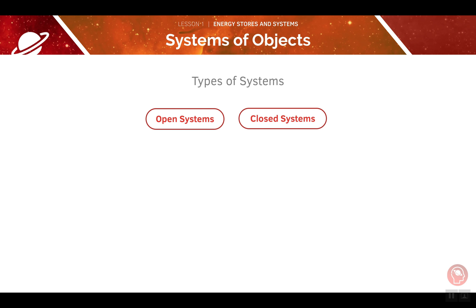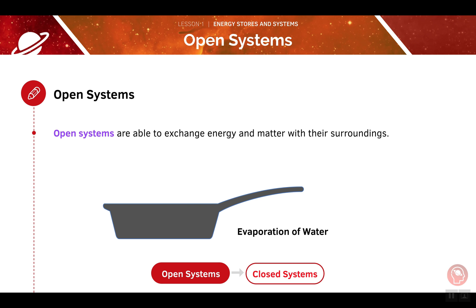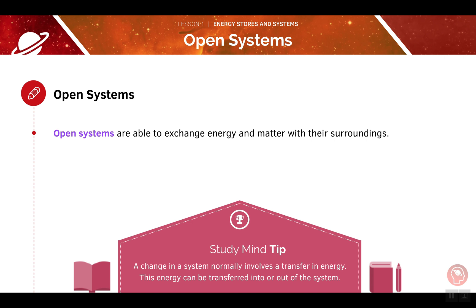There are two types of systems: open and closed. Open systems are able to exchange energy and matter with their surroundings. To make this clearer, we'll use an example. When water is boiled, heat energy is able to leave the system in the form of steam. As this energy gets transferred, the system is changing. Remember, changes in systems will often involve a transfer of energy — this energy can move into or out of the system.